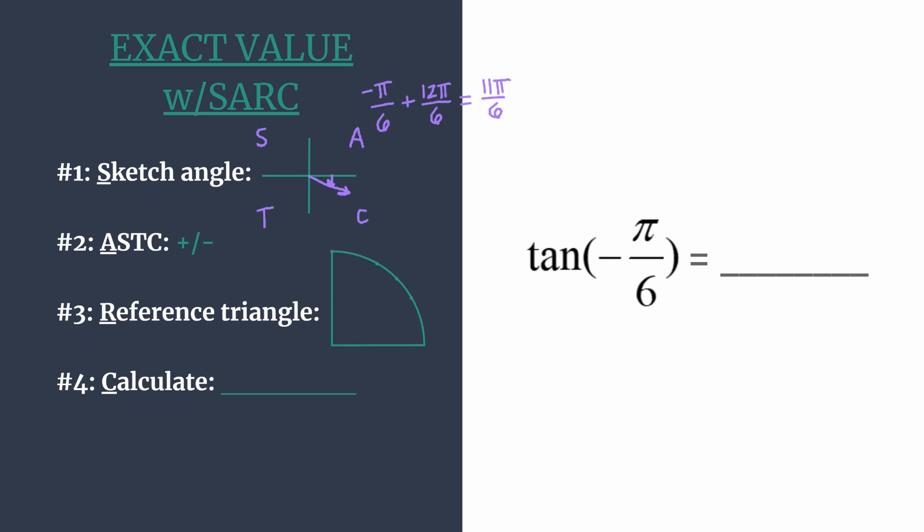In quadrant 1, all trig functions are positive. In quadrant 2, sine and cosecant are positive, all the rest are negative. In quadrant 3, tangent and cotangent are positive, while the rest are negative.